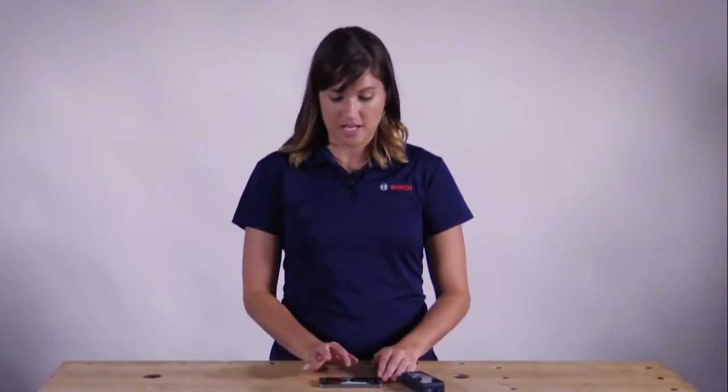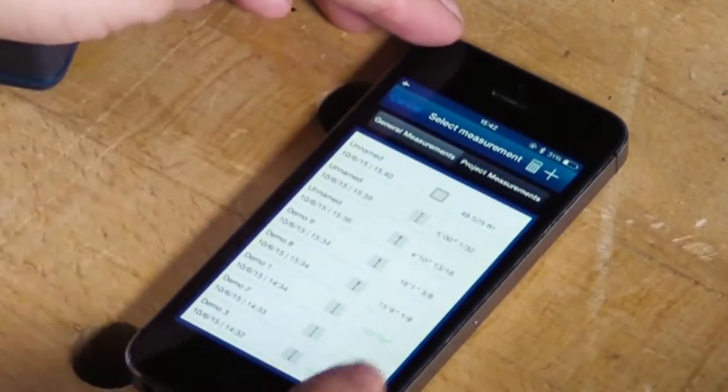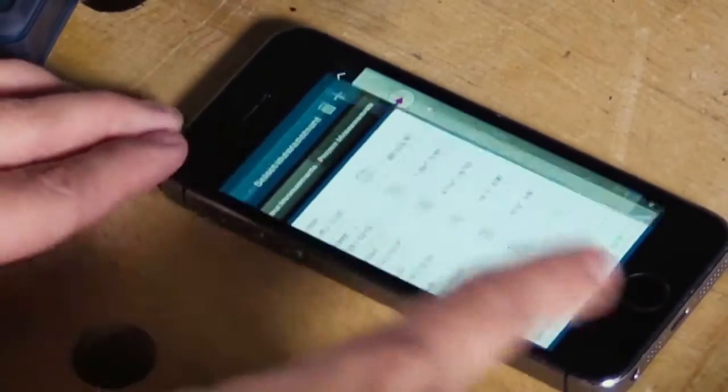Once you've drawn on lines you can click the list icon which then allows you to add measurements that you've already taken or stored to that project.